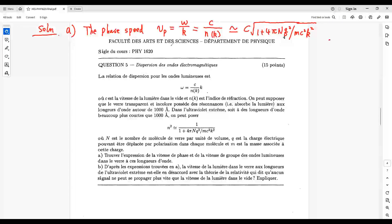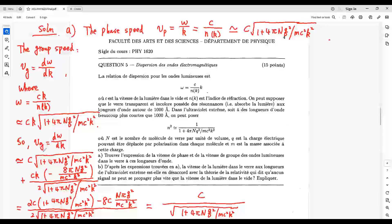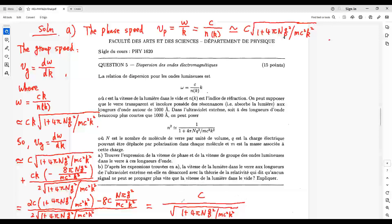The group speed Vg is given by this one. Well, omega given by this one. And from this one, omega equals this one. So, the group speed is given by this one.